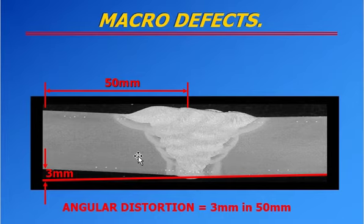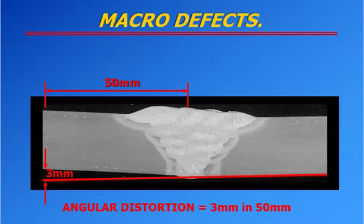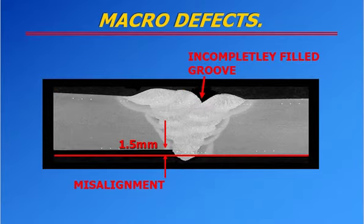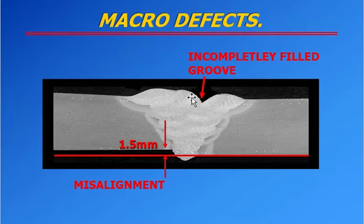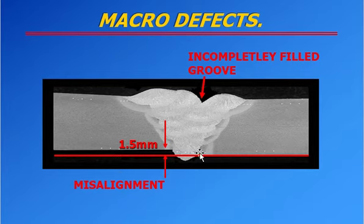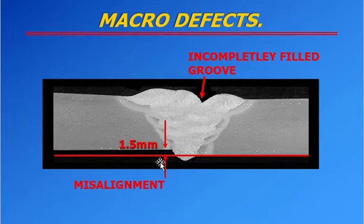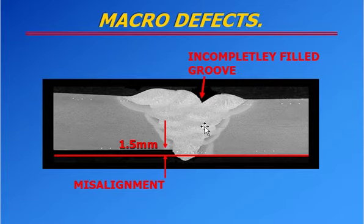This is one type of macro defect — angular distortion over 50 mm. In the macro section specimen, you have to check this defect as well. You can also see two more defects: one is an incomplete fillet groove — the fillet groove is not completed — and the other is misalignment. The plate is misaligned because the fit-up was not checked properly before welding. The misalignment is 1.5 mm, and you have to check the acceptance criteria.